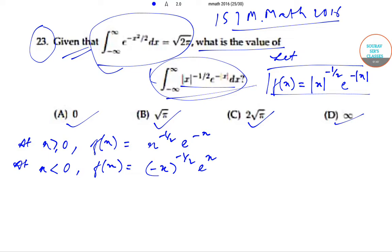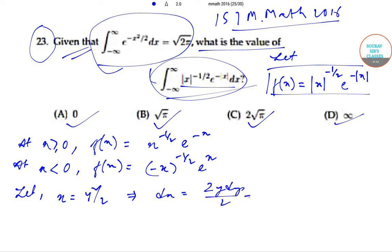Now let x equal y squared by 2. This implies dx equals 2y dy divided by 2, which equals y dy. So dx equals y dy.